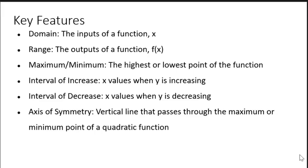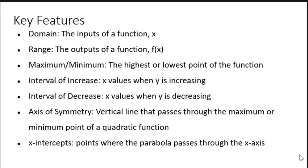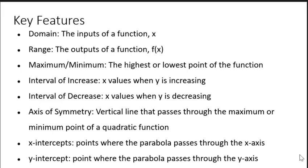The axis of symmetry is the vertical line that passes through the minimum or maximum point of a quadratic function. The x-intercepts are points where y equals 0. This is where the parabola passes through the x-axis. A quadratic function can have 0, 1, or 2 x-intercepts. The y-intercept is the point where x equals 0. Quadratic functions have only one y-intercept.